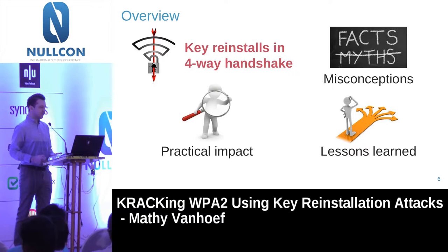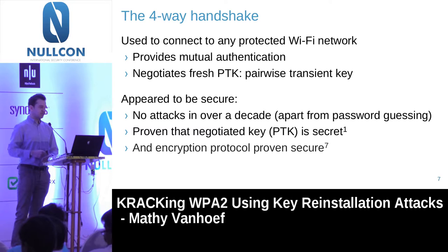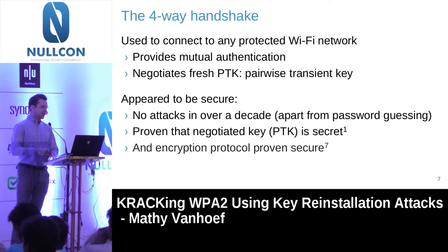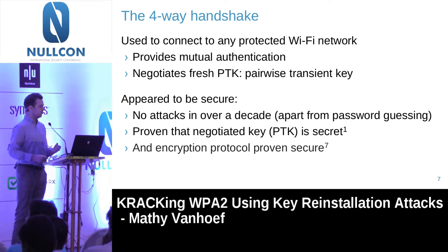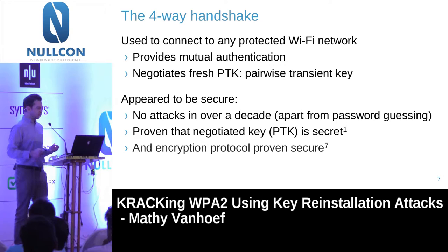The four-way handshake is used whenever you connect to a protected Wi-Fi network. It has two main purposes. The first is that it provides mutual authentication — you verify that the access point really is the one you want to connect to, and the access point verifies that you possess the proper credentials. At the same time, the four-way handshake also negotiates a fresh session key called the PTK, which will be used to encrypt data frames once the handshake has completed. About a year ago, this looked very secure, because there had been no attacks for more than a decade against these protocols — at least if you pick a secure password.